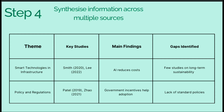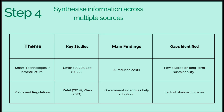Step four is synthesizing all the information you've read from multiple sources. I usually use a reading analysis table, where you can categorize all your reading notes and journal articles with columns for theme, key studies, main findings, and gaps identified. This will assist you greatly when you have to synthesize all the information.